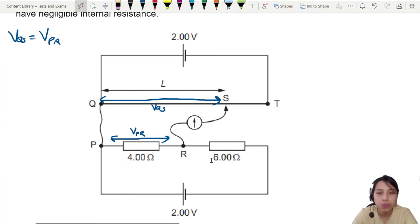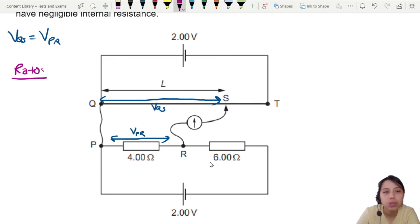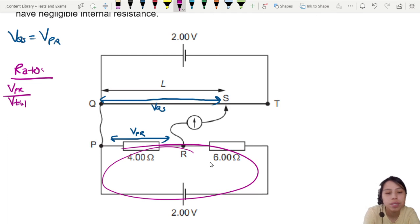So these two resistors, 4 and 6, they share the voltage. I take some, you take some. So let's find the thing. We're going to do a little bit of a ratio here. VPR over the total voltage, I'm just going to call this total supply to this loop. That's going to be equal to the ratio of 4 ohm over the total, which is 10 ohm.